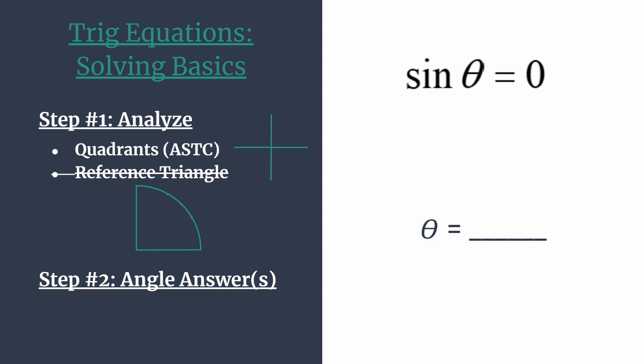We would think of that acronym ASTC, all students take classes, and you'd be figuring out which trig functions are positive and negative in each quadrant. But for this simplified version, we don't even have to do that. We just need to think again, like we said in the intro, which angle or angles have a y coordinate of zero or have no vertical movement.